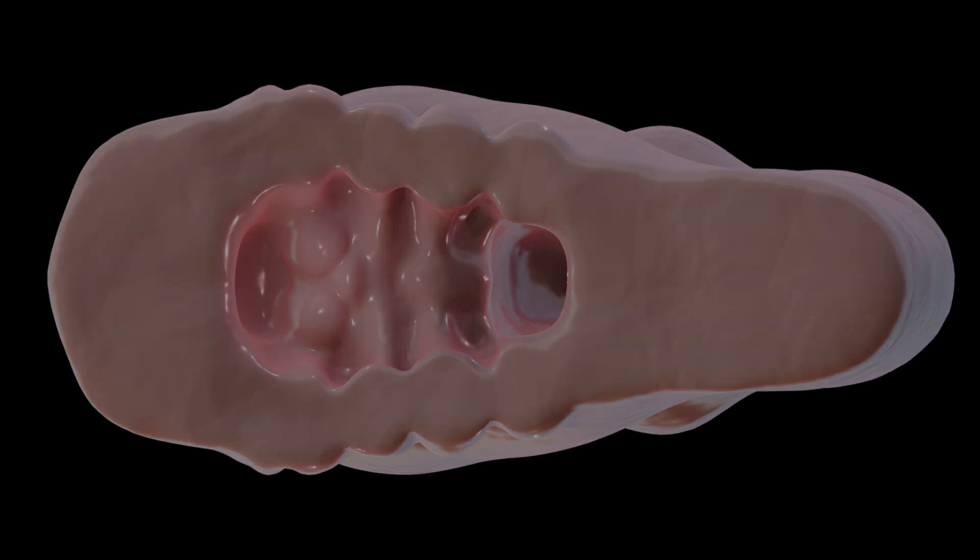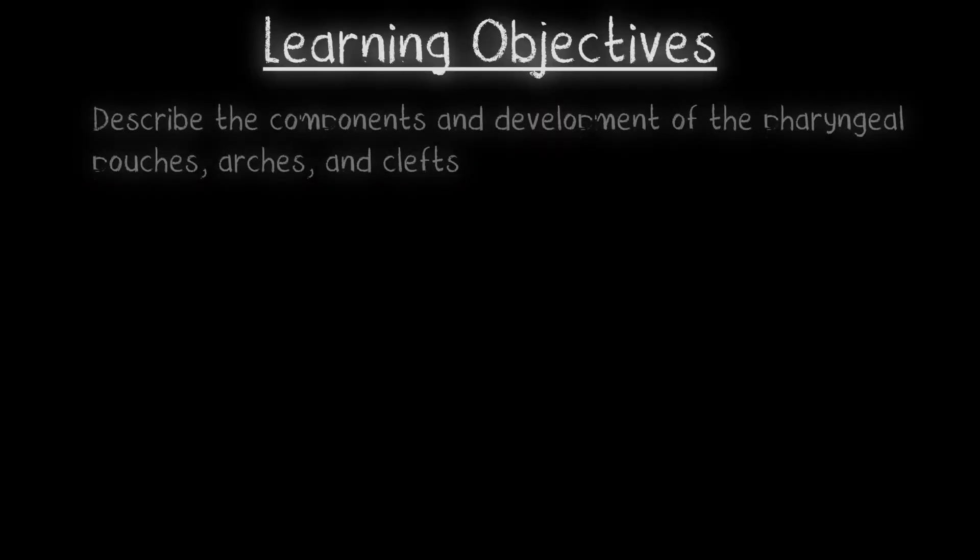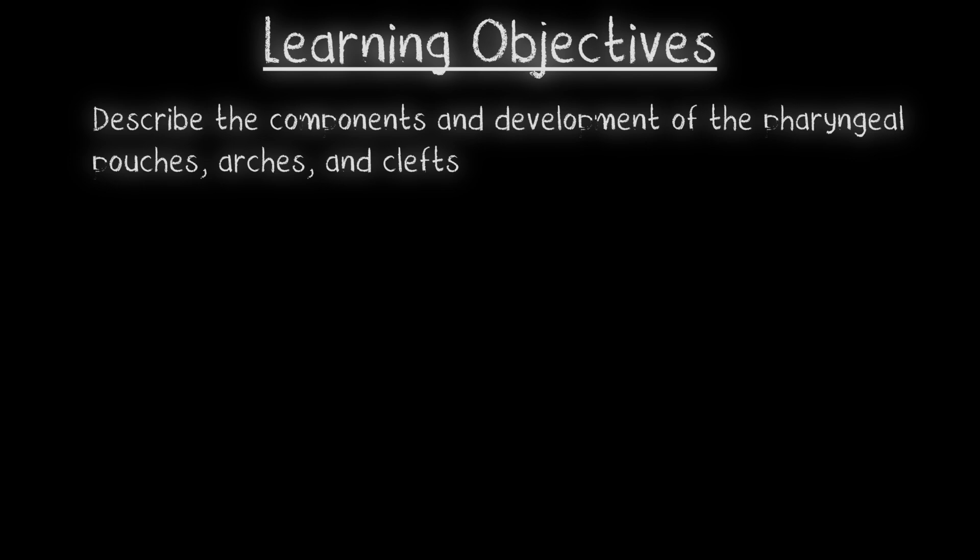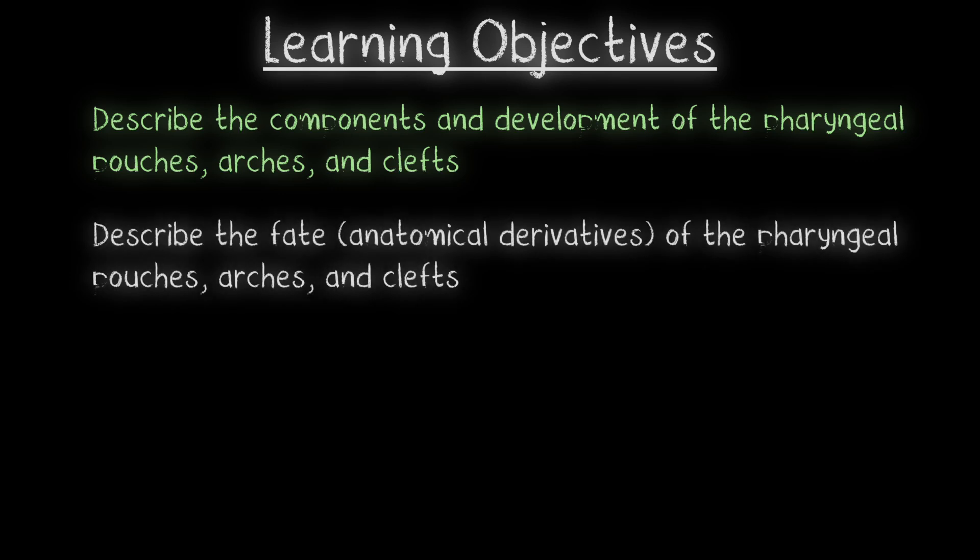Before we go too deep into the details, let's quickly go over our learning objectives for this video. First up, we'll describe the components and development of the pharyngeal arches, pouches, and clefts. Wait, didn't we just do that? Rhetorical question. Yes, we did. So check. Next, we'll explore the fate of these components and the adult structures they contribute to. This part will get a little bit more detailed, but don't worry, we'll break it down into two main sections.